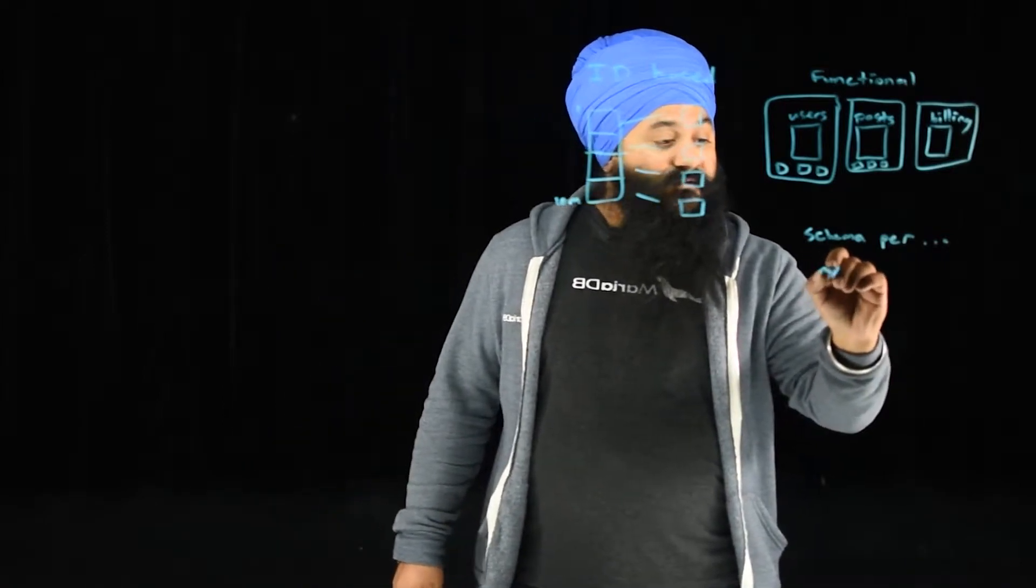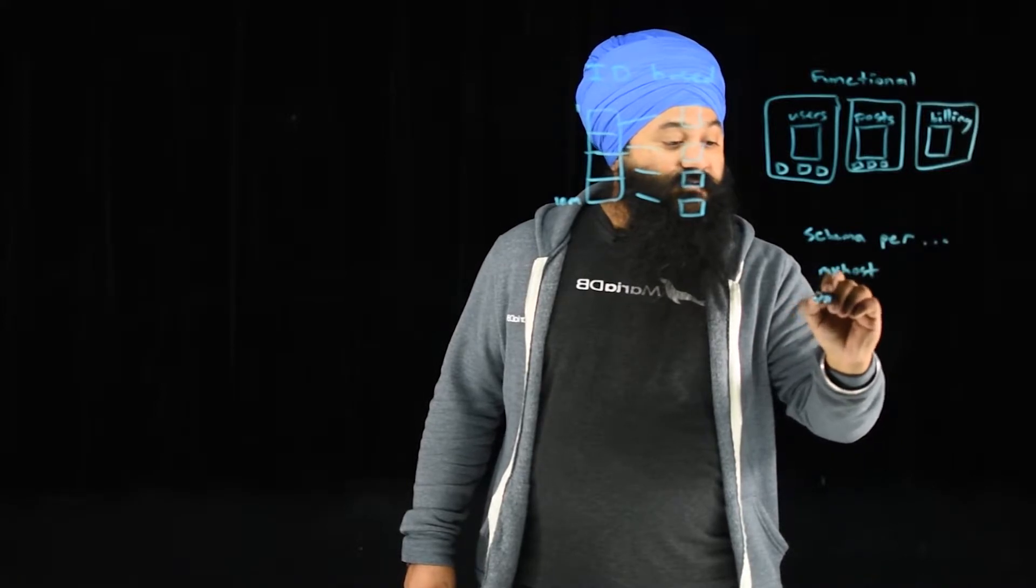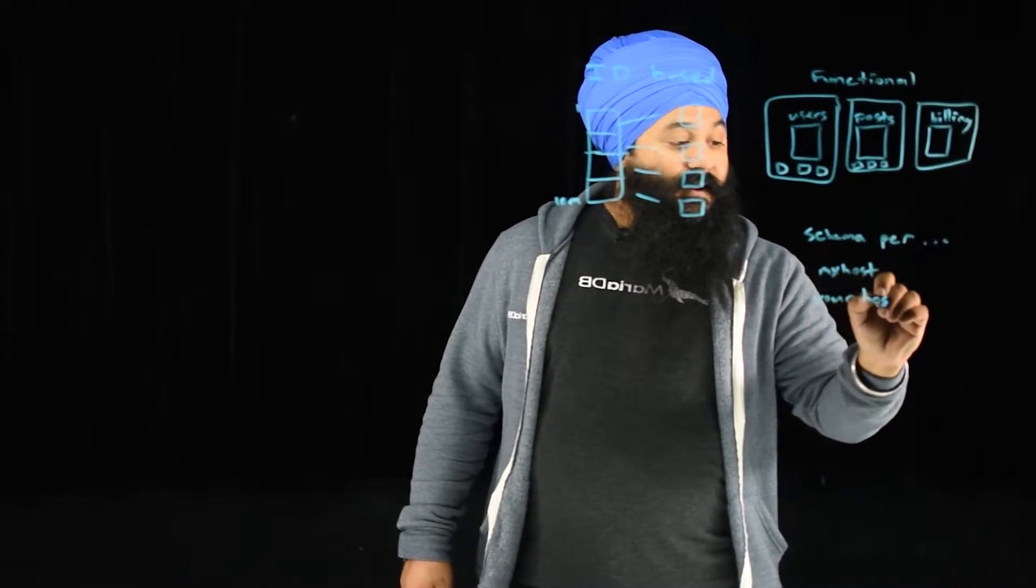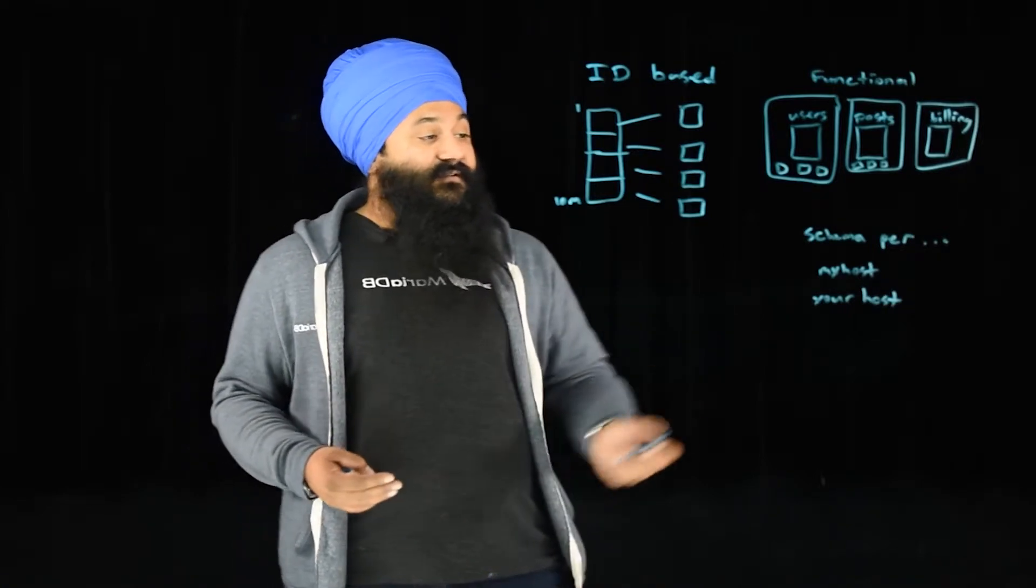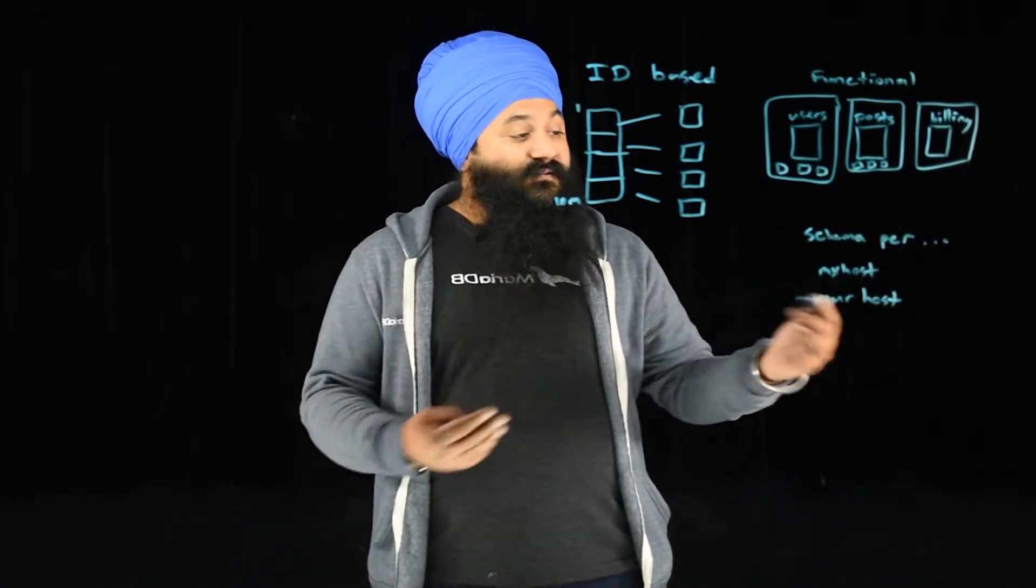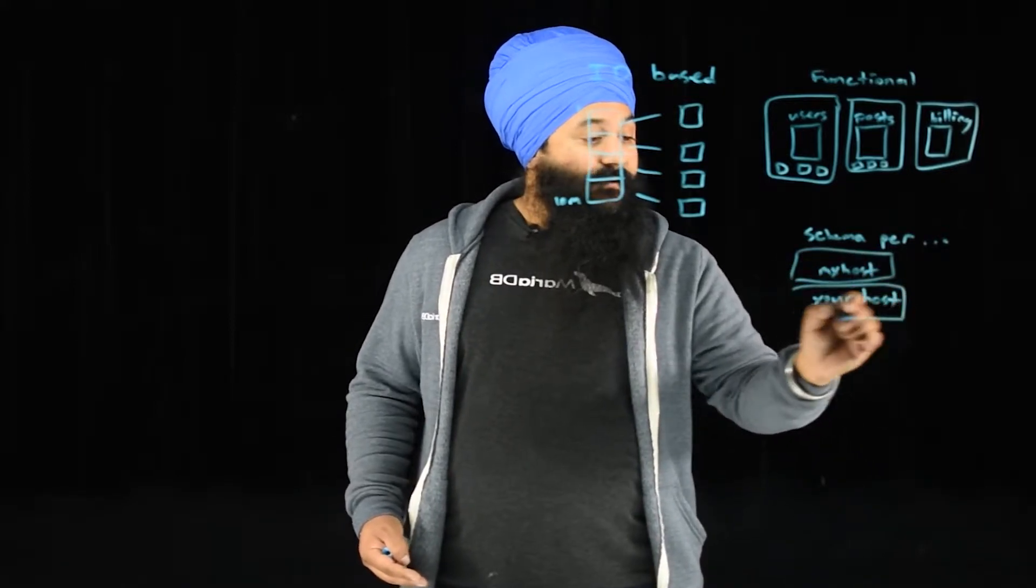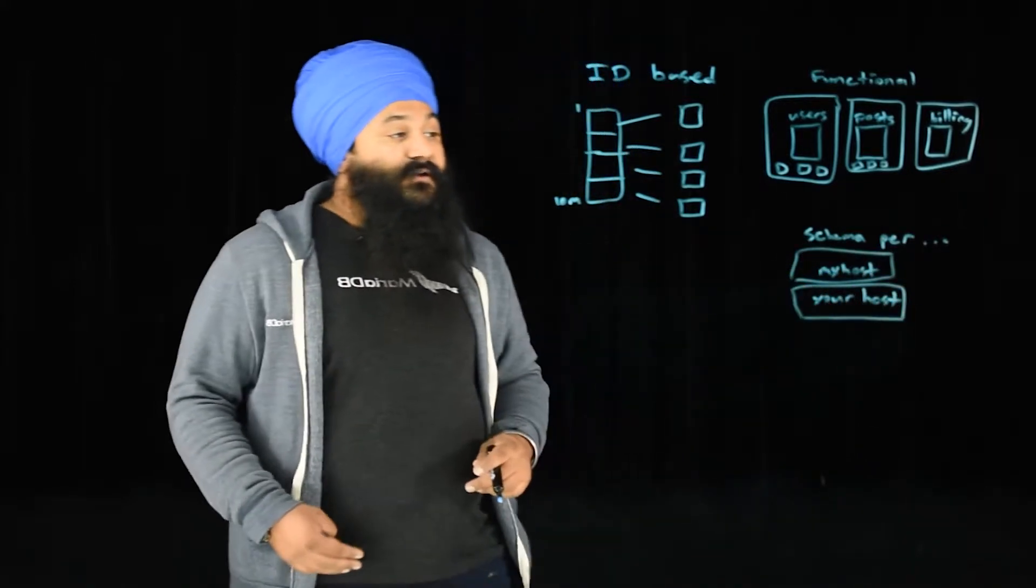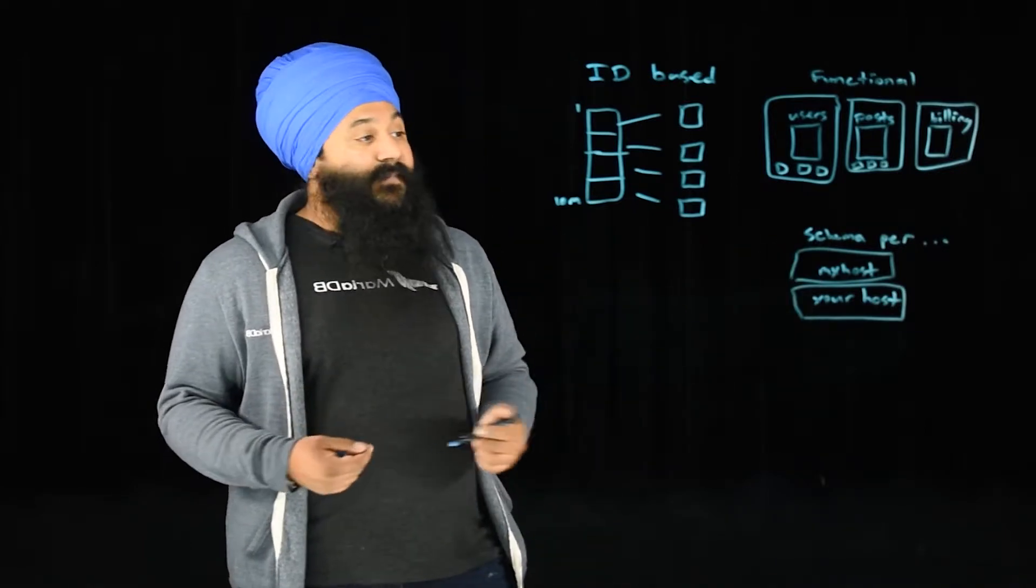So you might have myhost.com database, you might have another one for yourhost, and whatnot. And so as these schemas grow, they may outgrow the server. So let's say you have 100 of these, what you can do is take a few of them, put them on one node, and take another handful and put them on another node. You may get to the point where, let's say myhost is so large, you give it its own server for database.